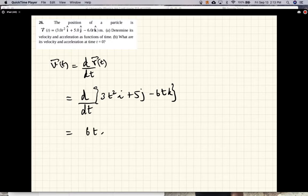So 6ti plus 0j minus 6k. That's the velocity as a function of time.